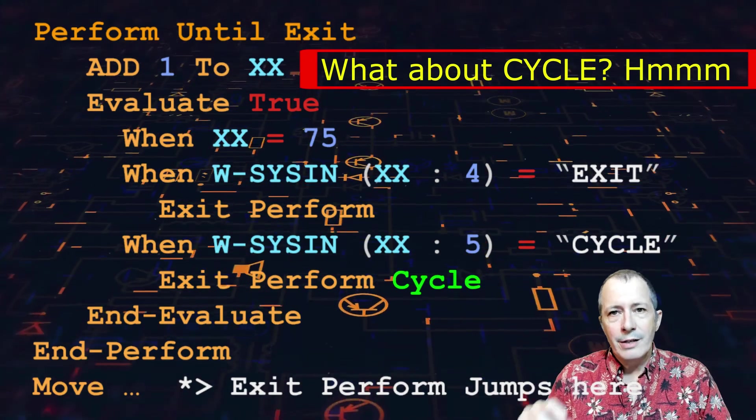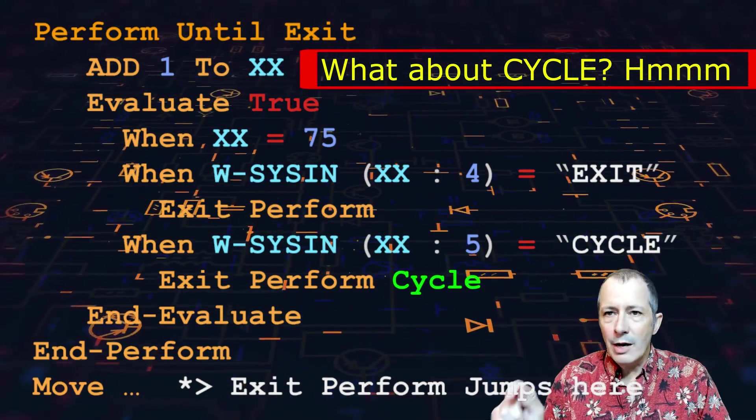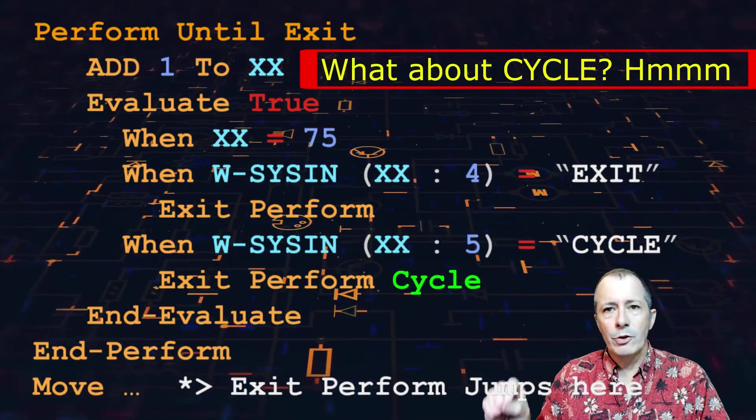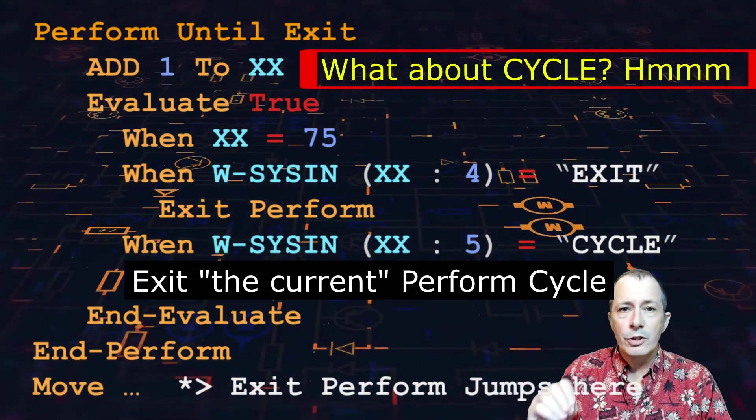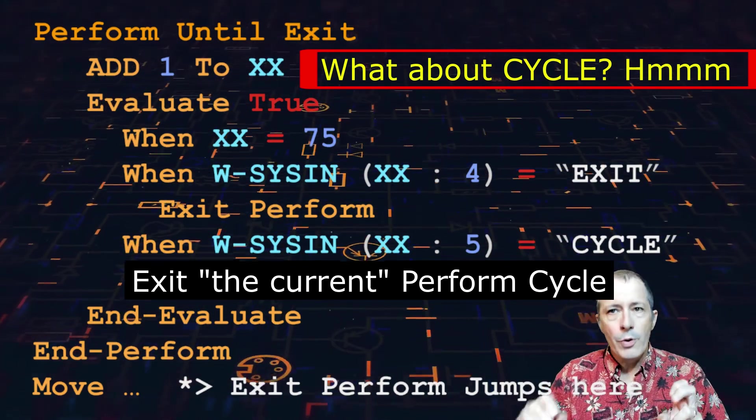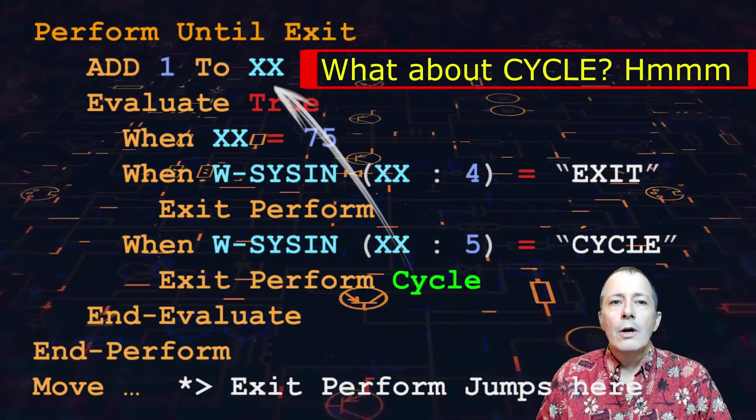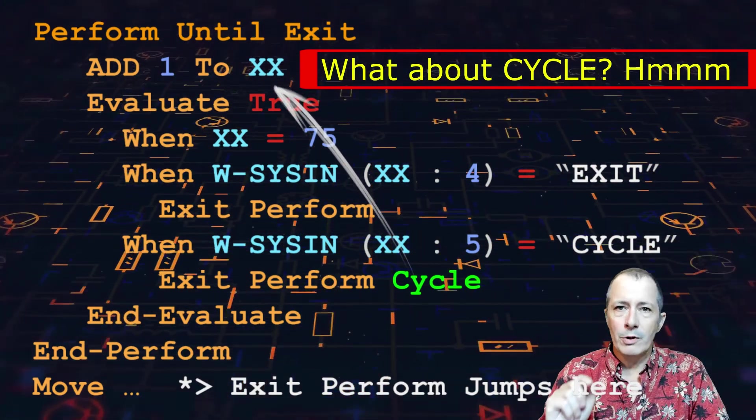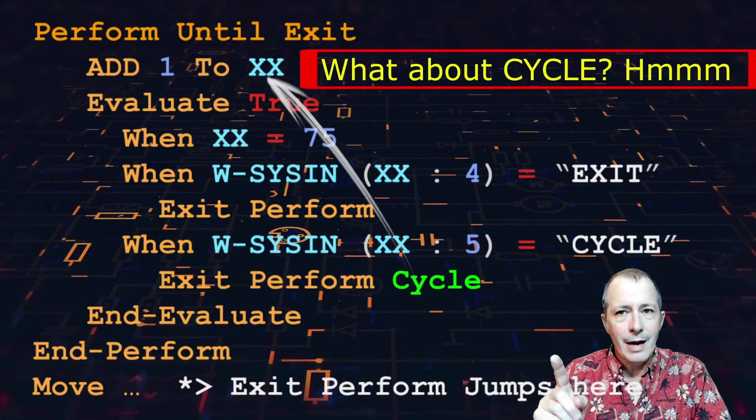When you see the phrase exit perform cycle, insert the word the current after the word exit. Thus, you would read that line as exit the current perform cycle. Control is transferred to the first statement in the loop, which in this example is add 1 to xx.